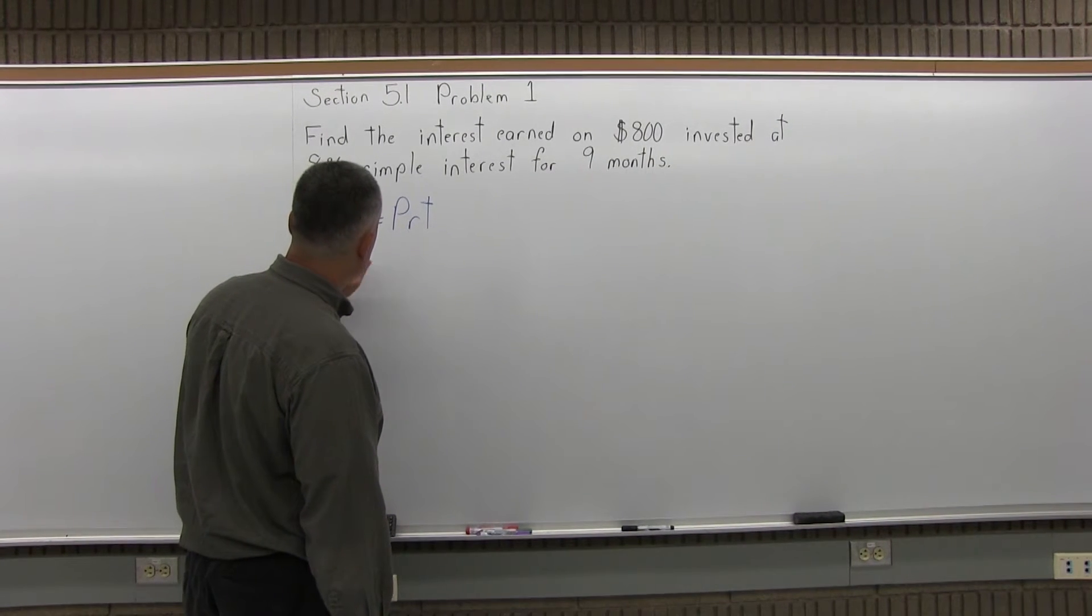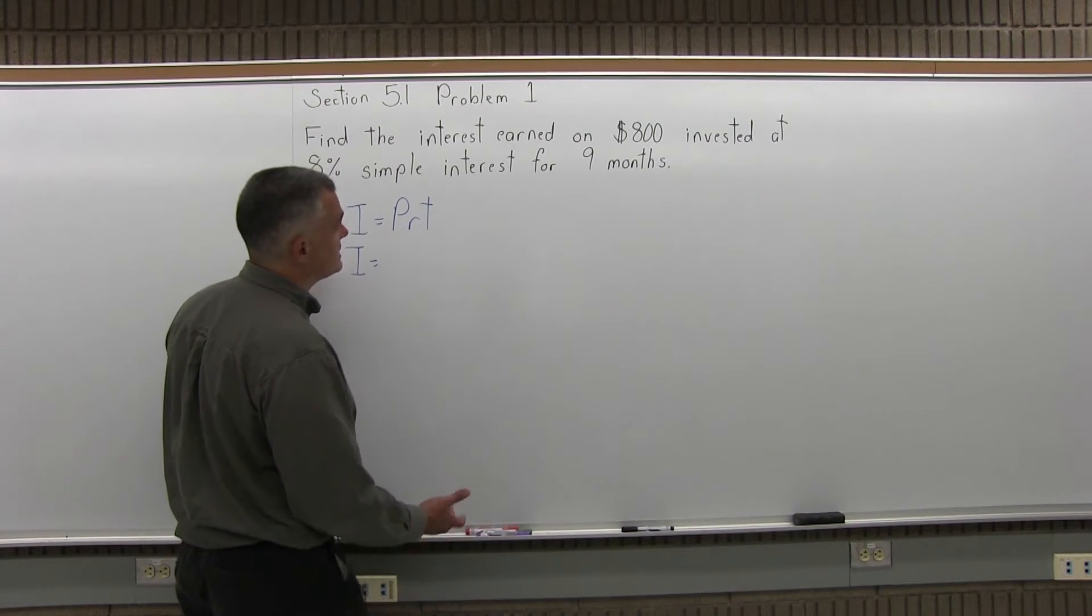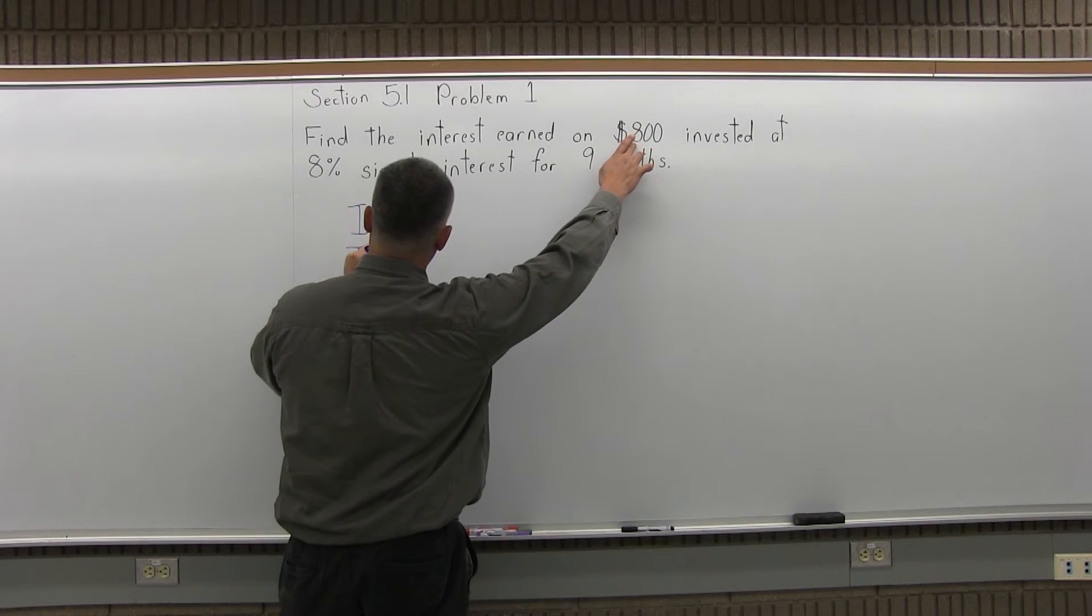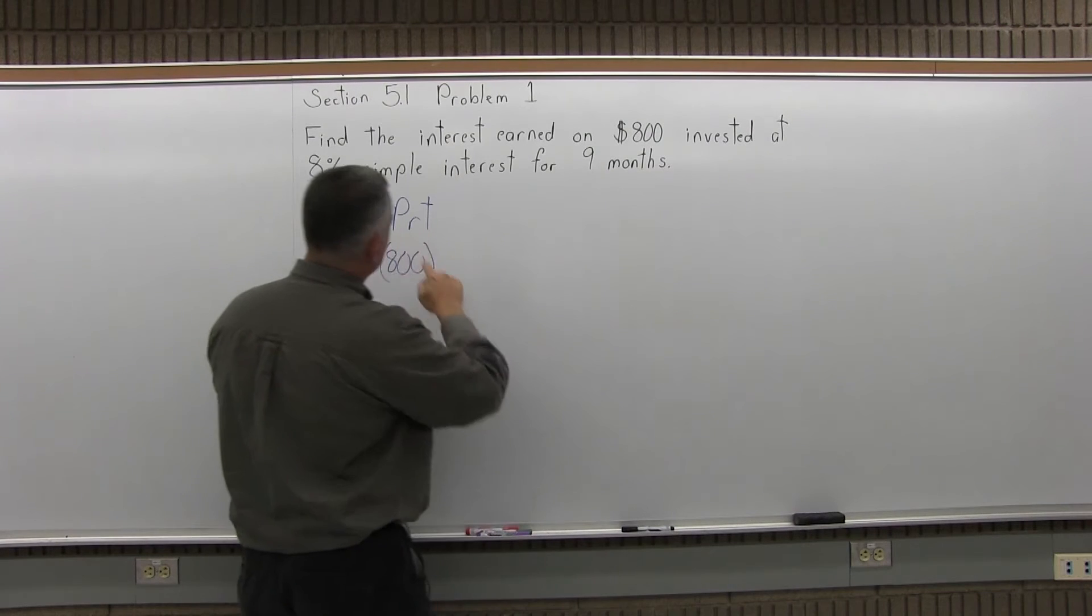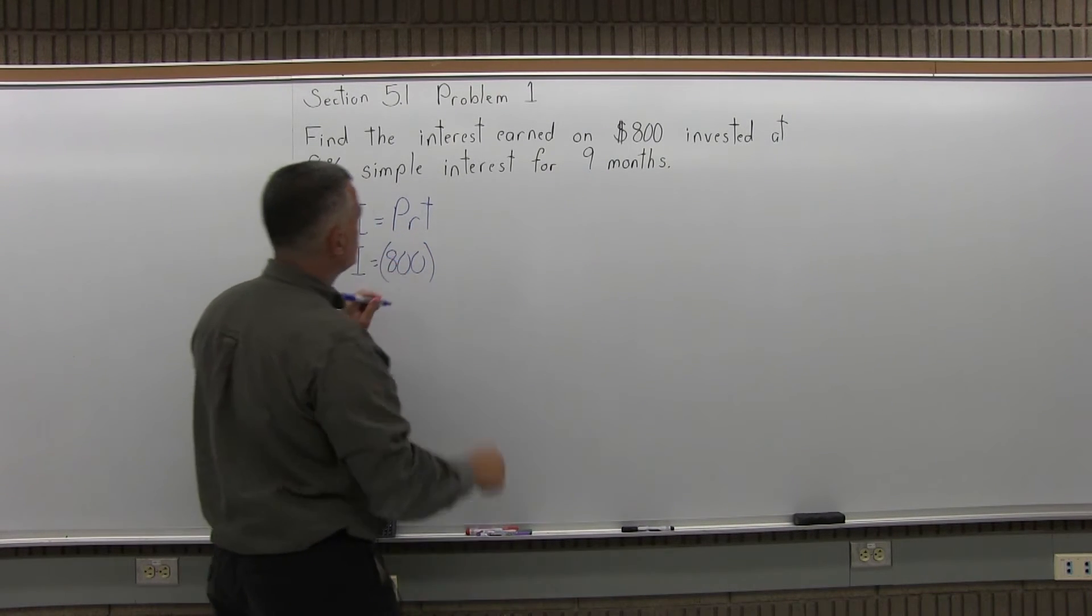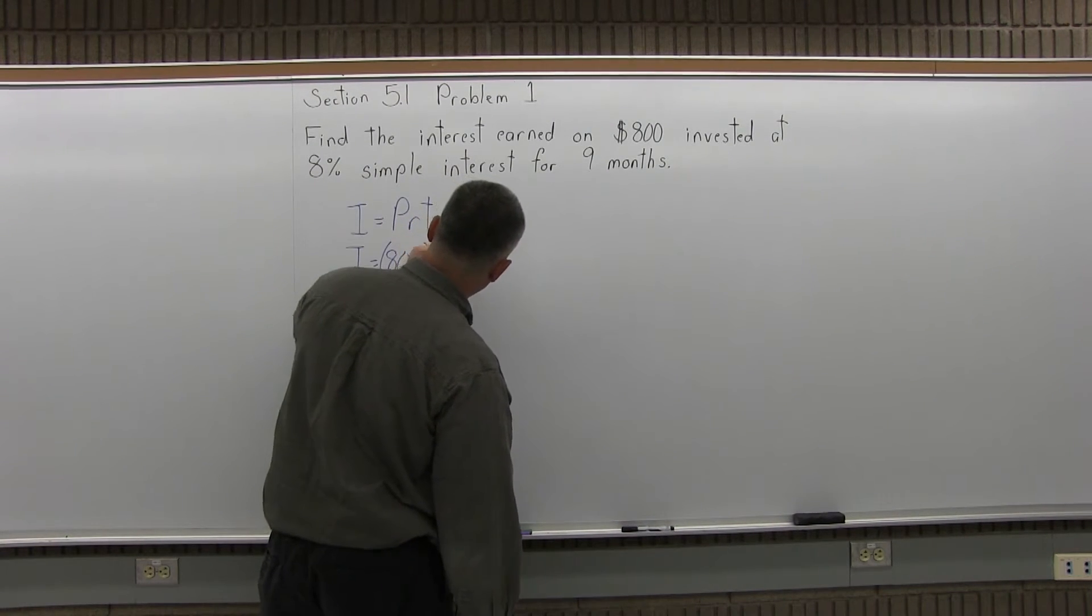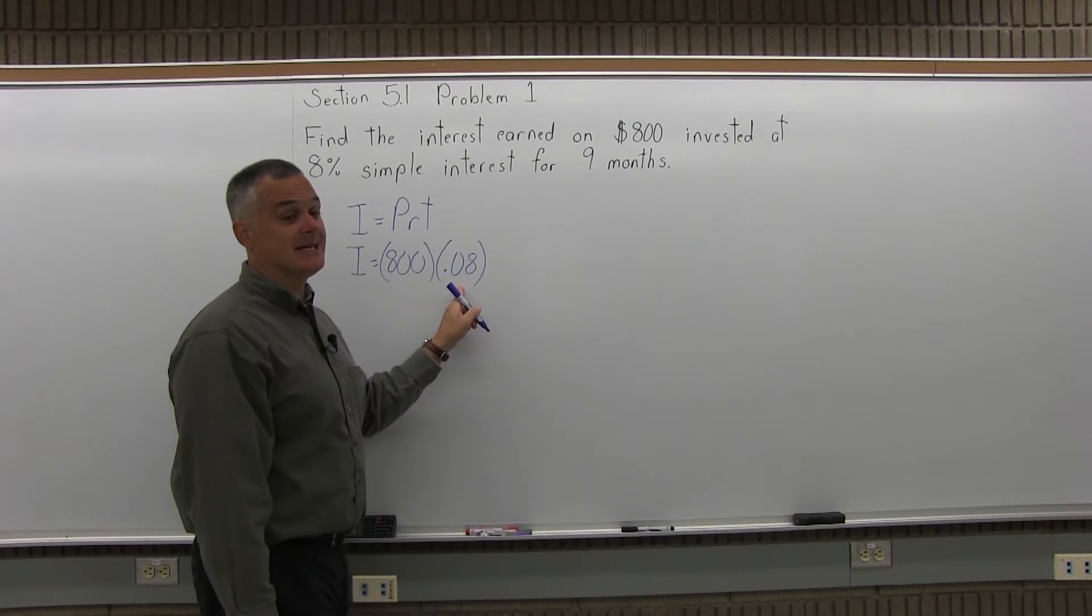The interest equals, P for principal is the initial investment, which for this problem is $800, times the rate as a decimal. So this 8% has to go into the formula as 0.08. It's the rate as a decimal.